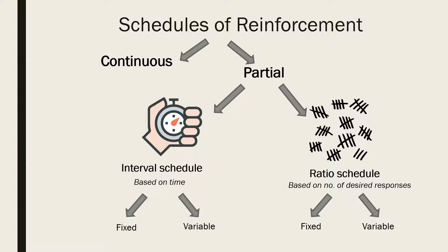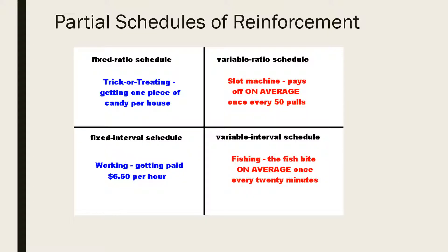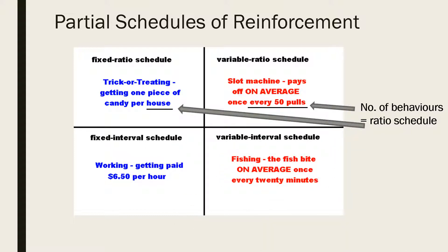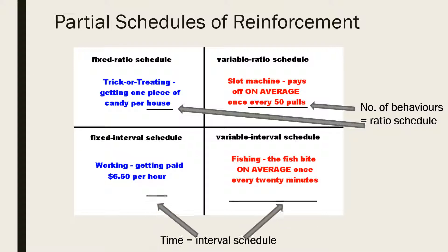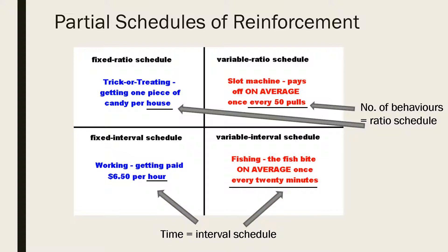Let's look at an example of each of these four partial reinforcement schedules. The top two examples are both ratio schedules as an nth number of responses are being reinforced. The subject is receiving candy per house or every 50 pulls of the slot machine. The bottom two examples are both interval schedules as a minimum amount of time is passing before reinforcement is received.